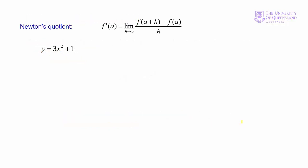We have our Newton's quotient. We want to evaluate f prime of a at a equals 1. To do that, we'll substitute it into our Newton's quotient for f of a and f of a plus h, and then take the limit as h approaches 0.